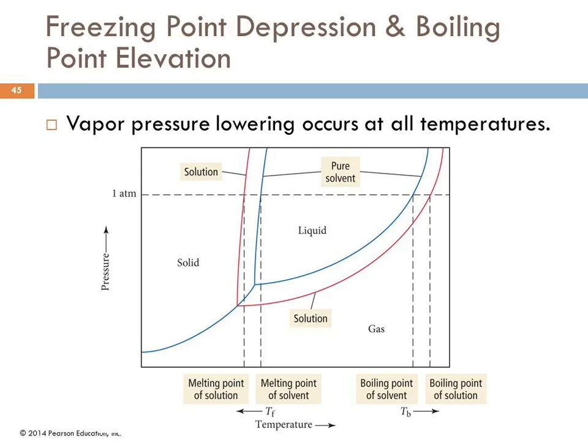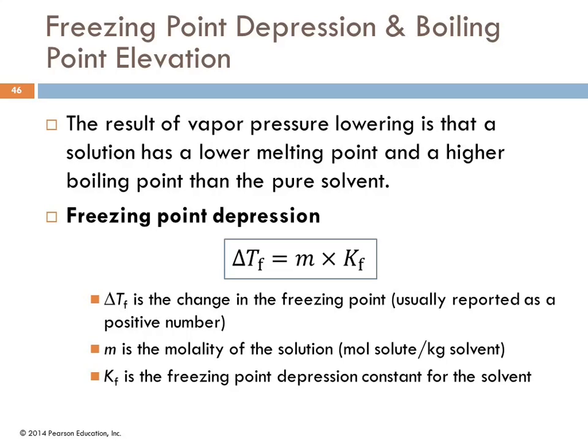A helpful mnemonic: the freezing point and boiling point move away from each other—the freezing point goes down, the boiling point goes up. Adding a solute that lowers vapor pressure causes both endpoints to shift outward.